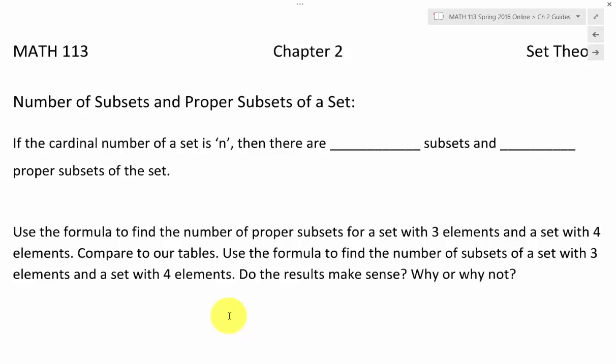If we looked at our information from the previous page, we saw that if we had three elements in our set, we had seven proper subsets. And if we had four elements in our set, we had fifteen proper subsets.